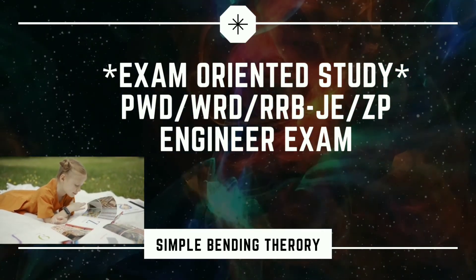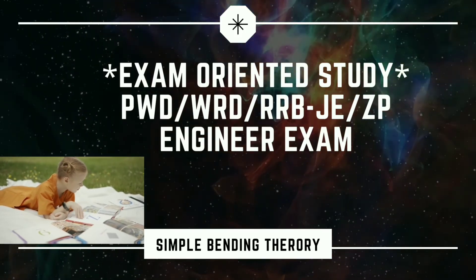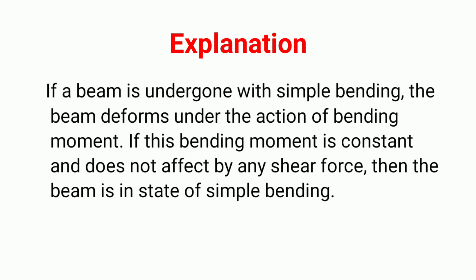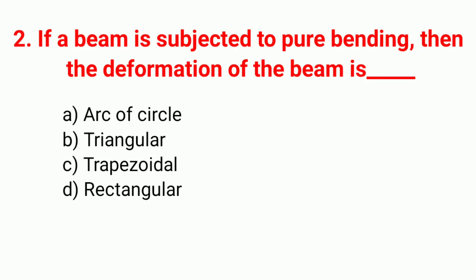Question 1: In simple bending, dash is constant. The correct answer is option D — bending moment is constant. Explanation: if a beam undergoes simple bending, it deforms under the action of bending moment. If this bending moment is constant and is not affected by any shear force, then the beam is in a state of simple bending.